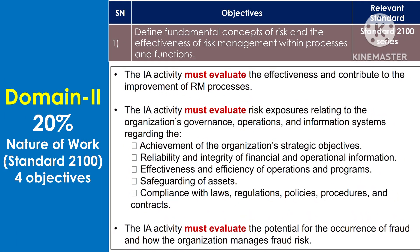The basic requirement of Standard 2100 is that the internal audit activity must evaluate the effectiveness and contribute to the improvement of risk management processes. The internal audit activity must evaluate risk exposures relating to the organization's governance, operations, and information systems regarding: achievement of strategic objectives; reliability and integrity of financial and operational information; effectiveness and efficiency of operations and programs; safeguarding of assets; and compliance with laws, regulations, policies, procedures, and contracts. It must also evaluate the potential for occurrence of fraud and how the organization manages fraud risk.